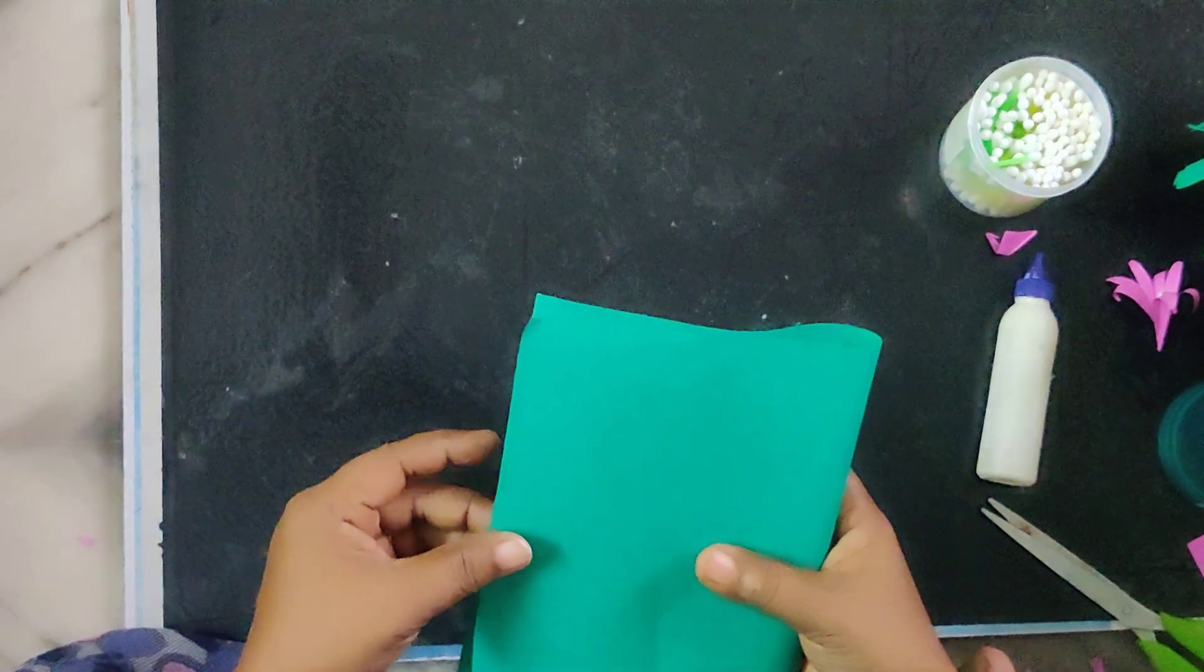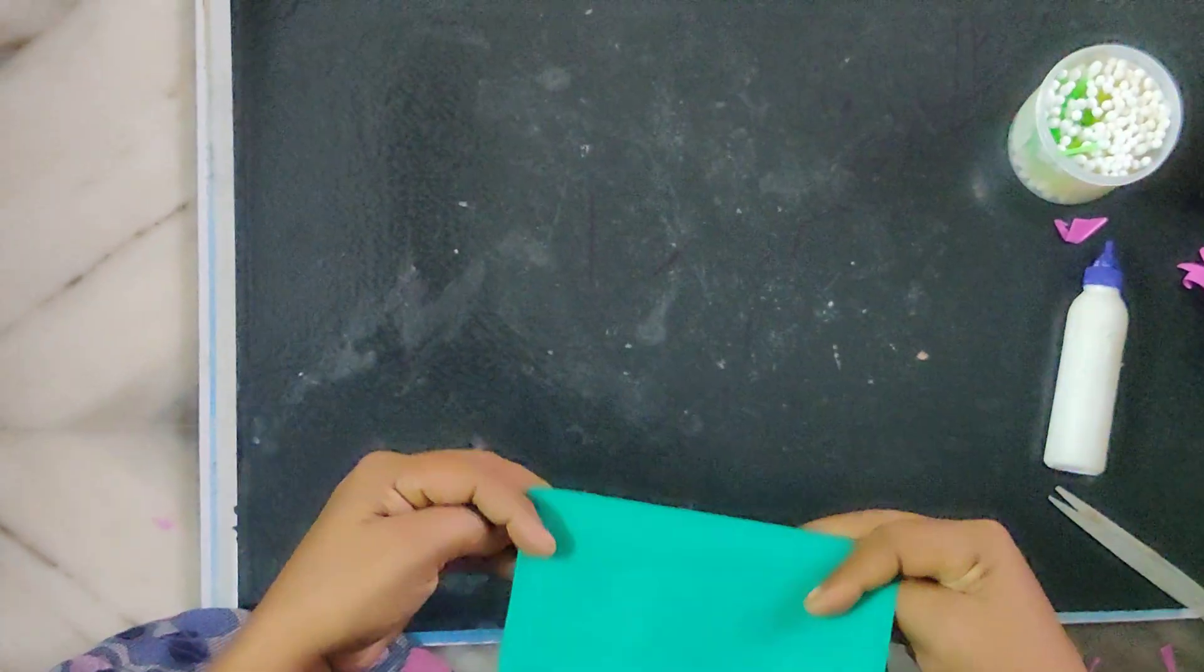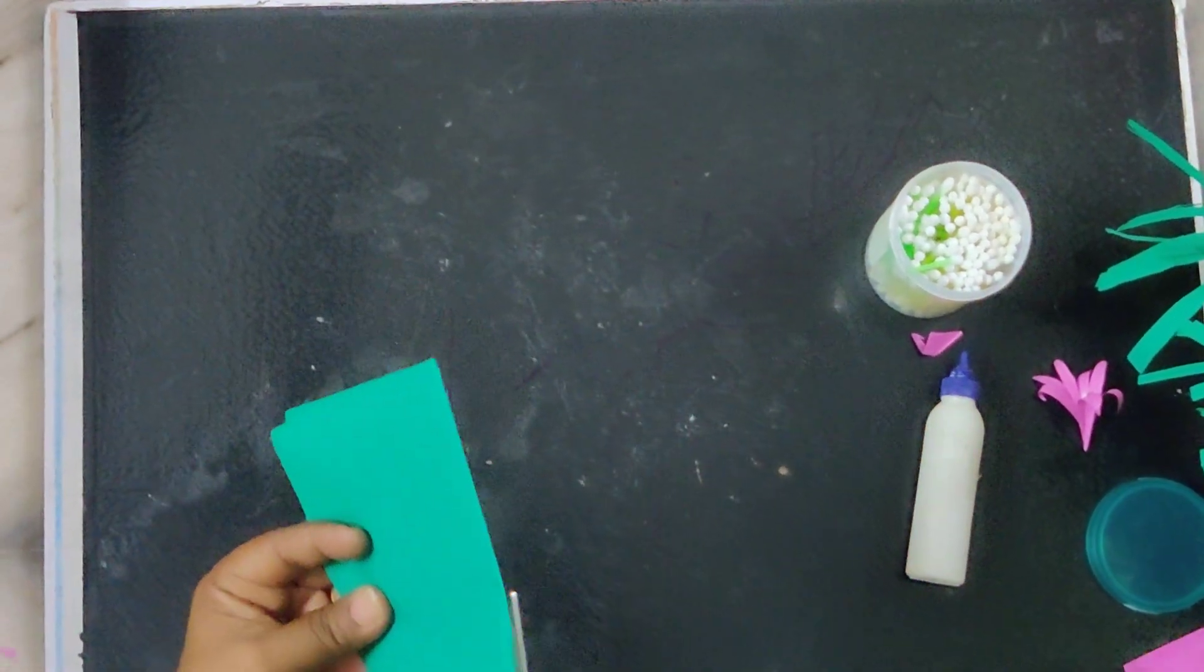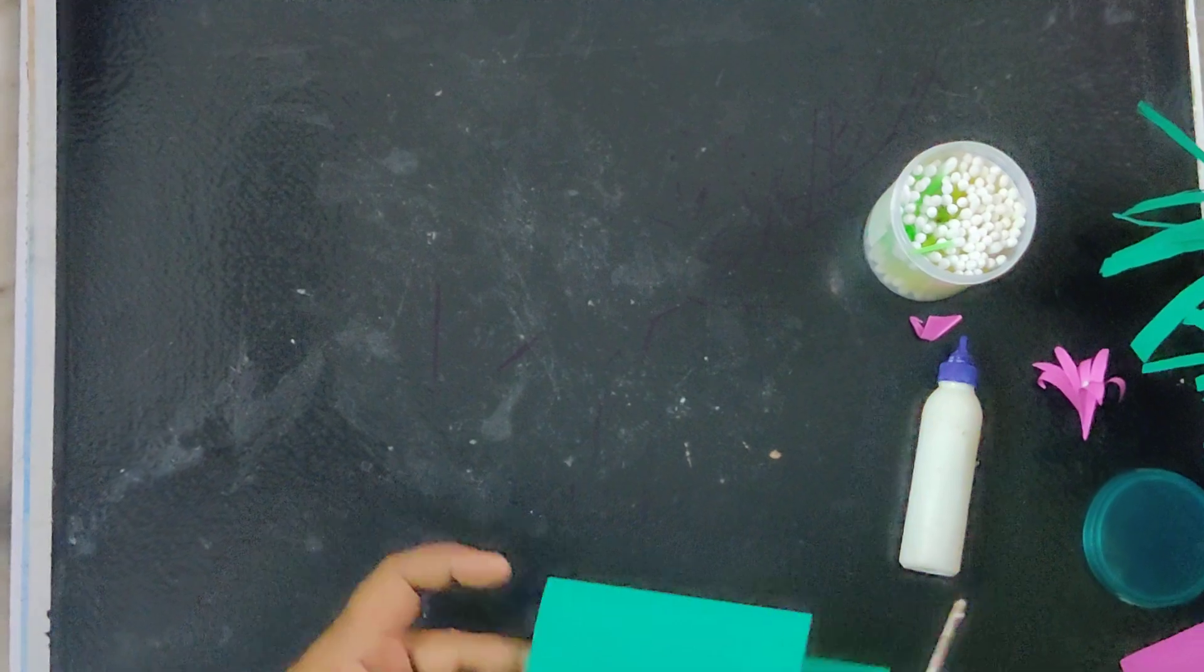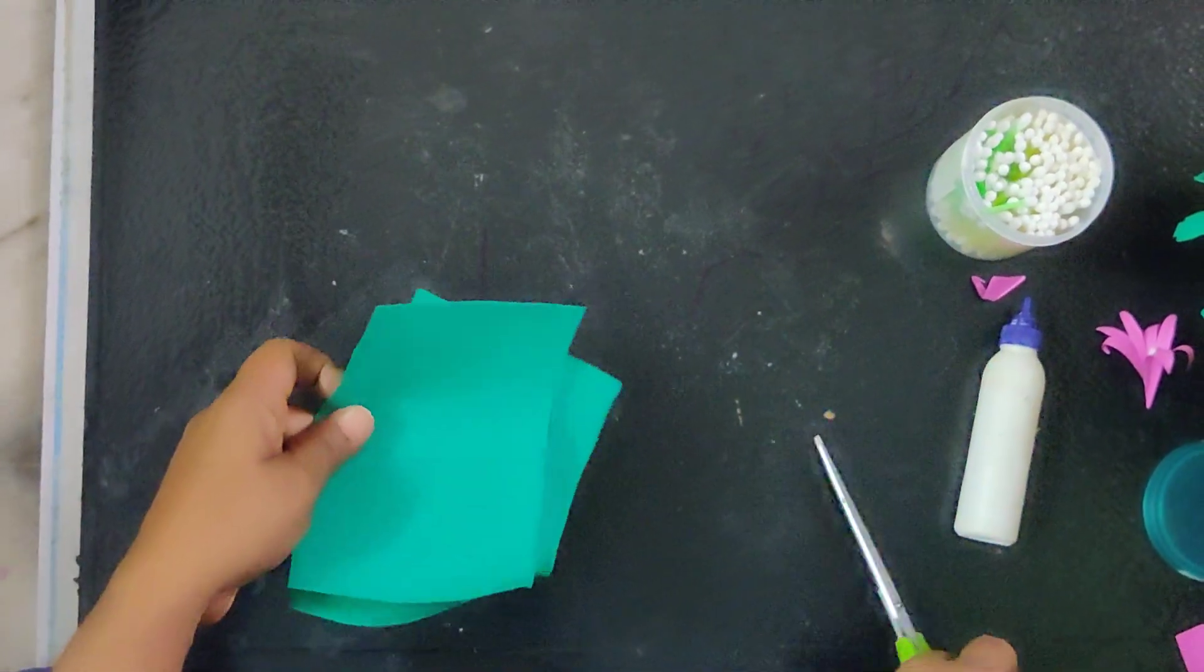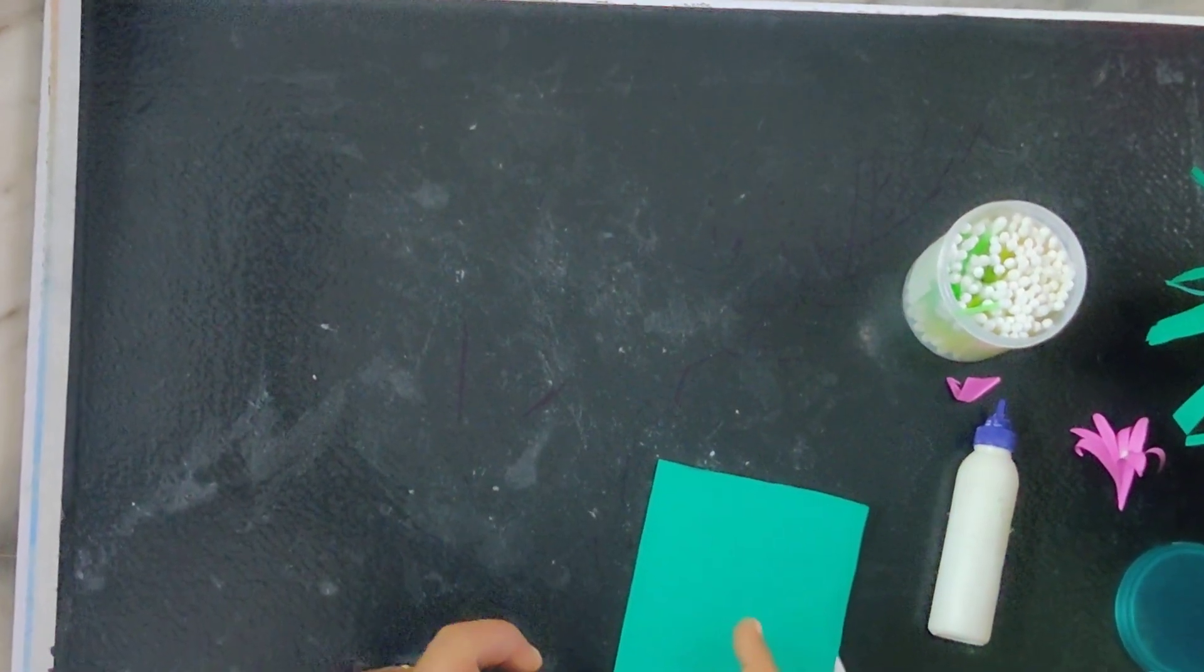Now we have 4 sheets of green and 4 parts of the petals. Then we cut 4 parts of the petals.